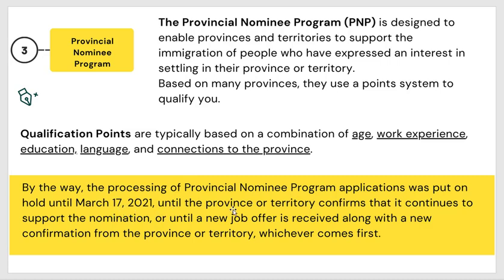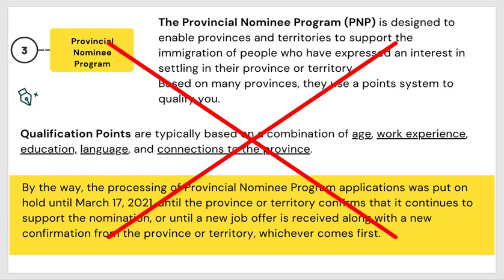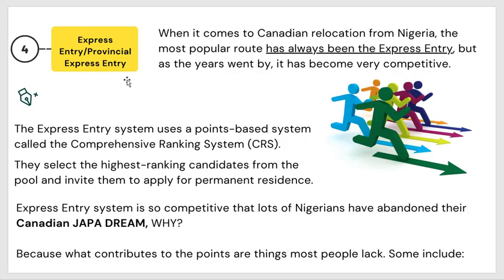If you don't have all these things, you are not qualified for the PNP. By the way, the processing of provincial nominee program applications was put on hold until March 2021, until the province or territory confirmed they want to continue the program. So if you are interested in this type of program, you have to confirm if the ban was lifted. Like the others, this is not what we want to use — it is a no for us.